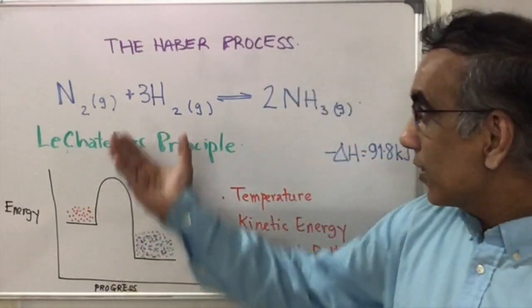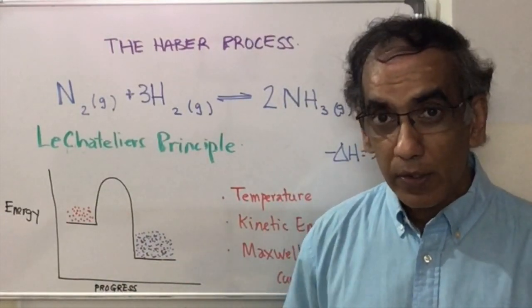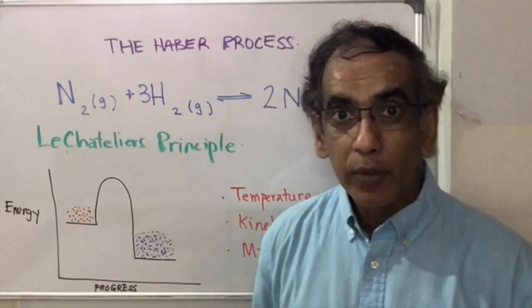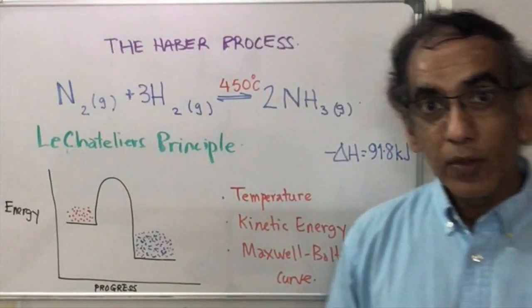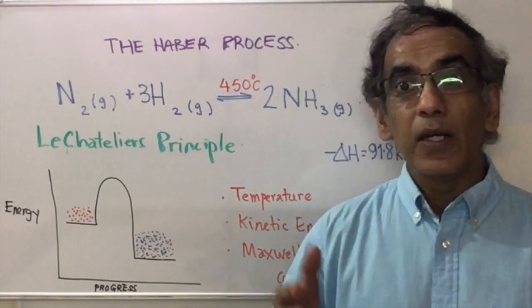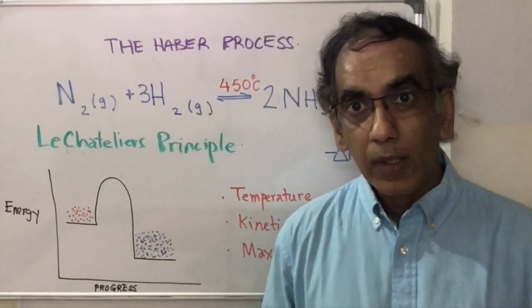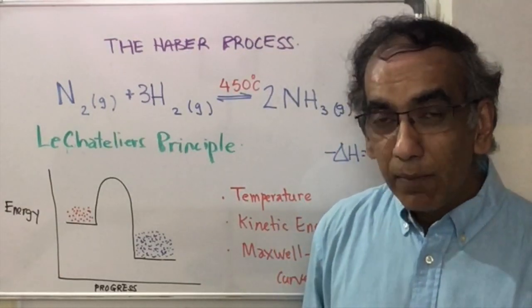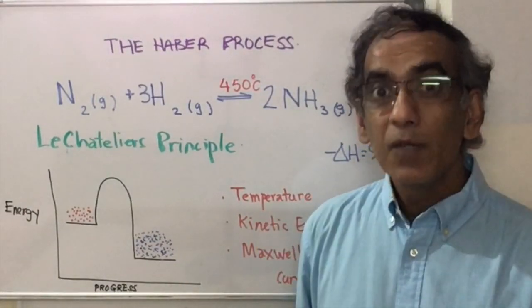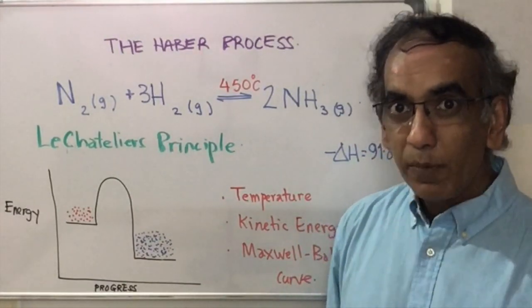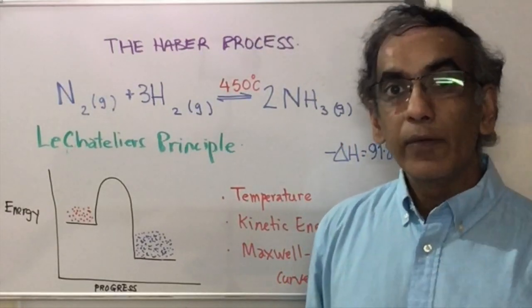Why is it that for an exothermic reaction like the Haber process, the forward reaction is favored by low temperatures? And to add to the confusion — if it's favored by low temperatures, then why do we use a temperature of 450 degrees Celsius in the industrial manufacture of ammonia? The reason given is that at low temperatures the rate of reaction is too slow, but if low temperature favors ammonia production, this explanation can leave you quite confused.